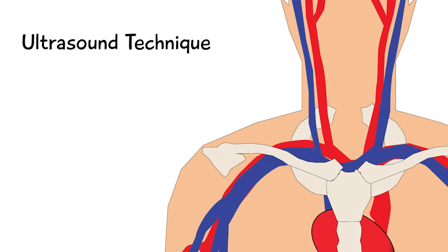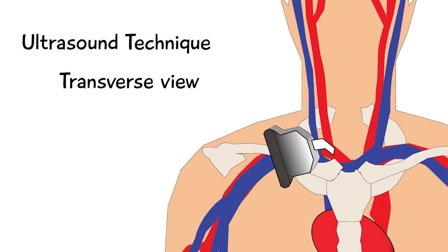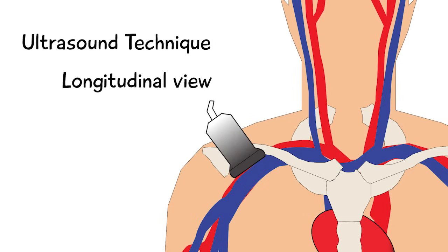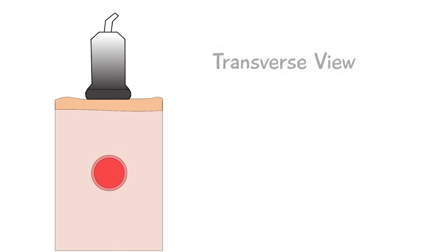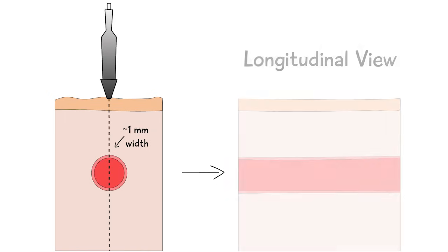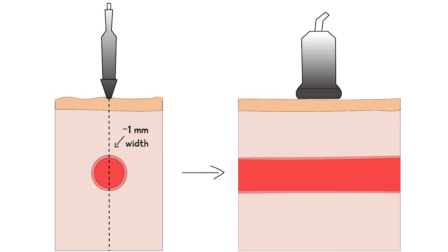Next we will review the ultrasound technique, which uses two probe orientations. The first is transverse view, in which the plane of the probe is perpendicular to the vessel. The second is the longitudinal view, in which the plane of the probe is parallel to the vessel. This cartoon depiction shows the transverse view where the vessel appears as a circle in cross-section when the probe is held perpendicular to it. If the probe is rotated 90 degrees while keeping the center over the vessel, we obtain the longitudinal view. The beam width of most ultrasound probes is around 1 mm, which is about the size of a pen tip. The longitudinal view shows the vessel in length as it courses across the screen.